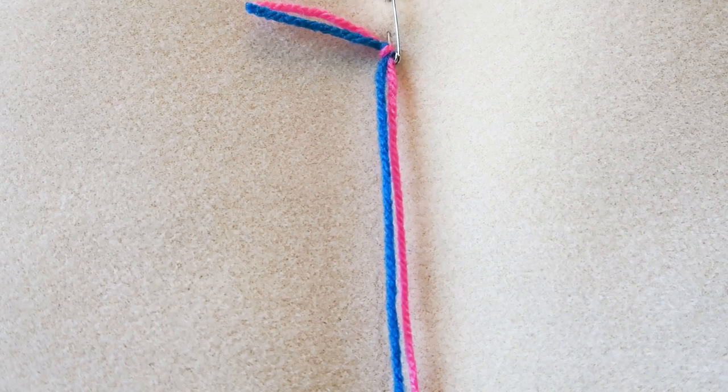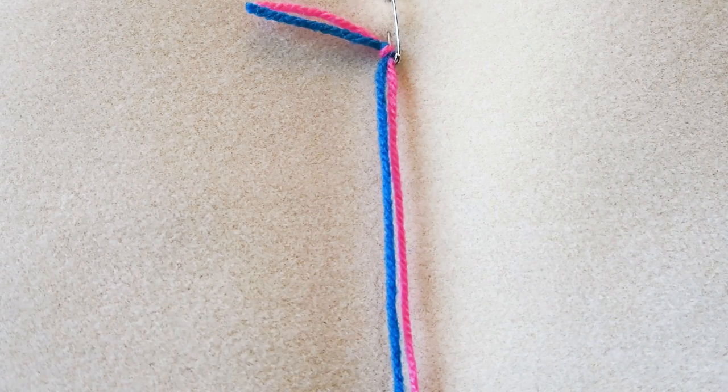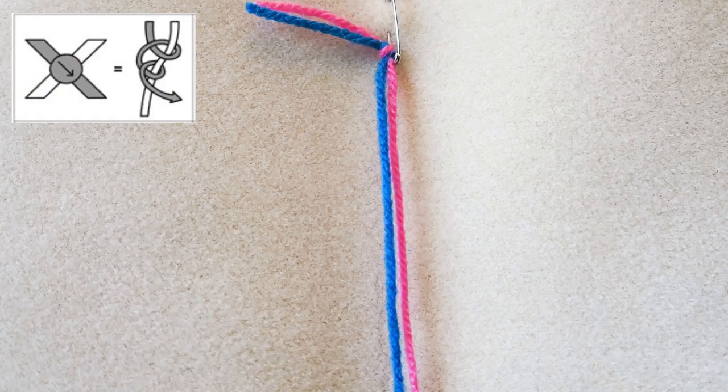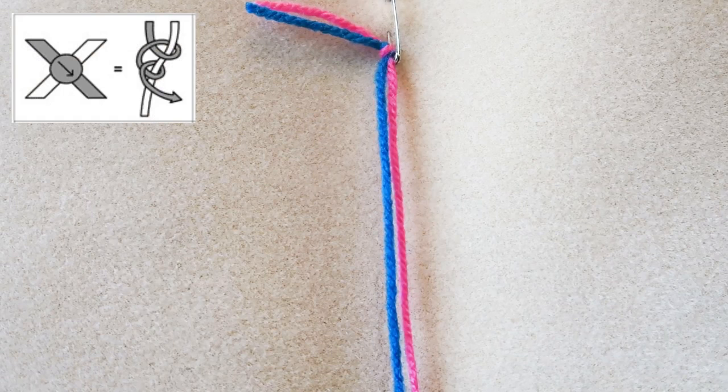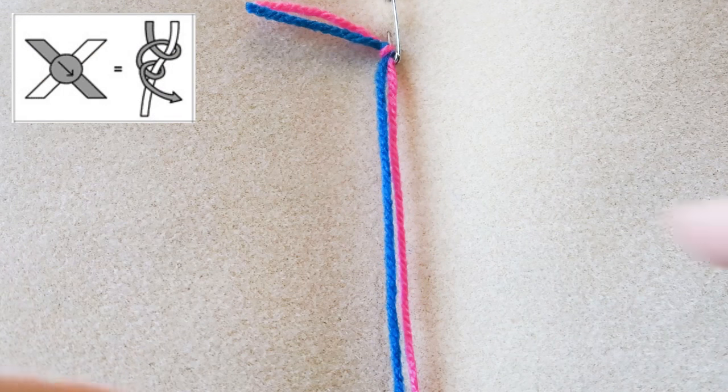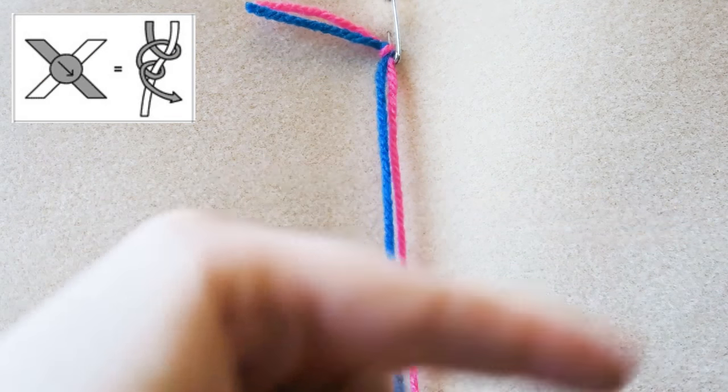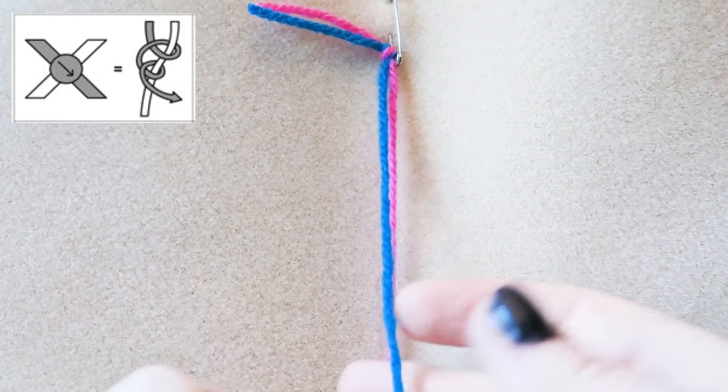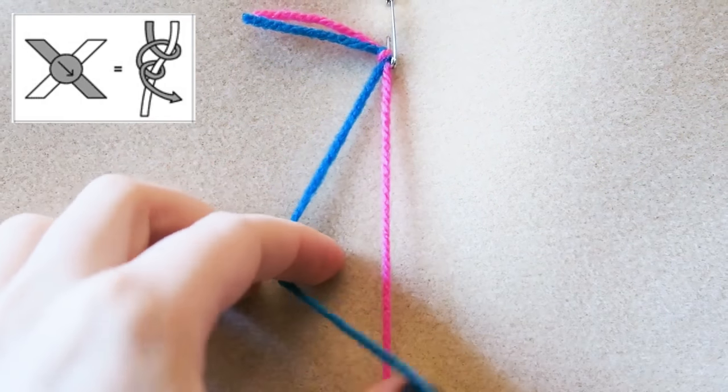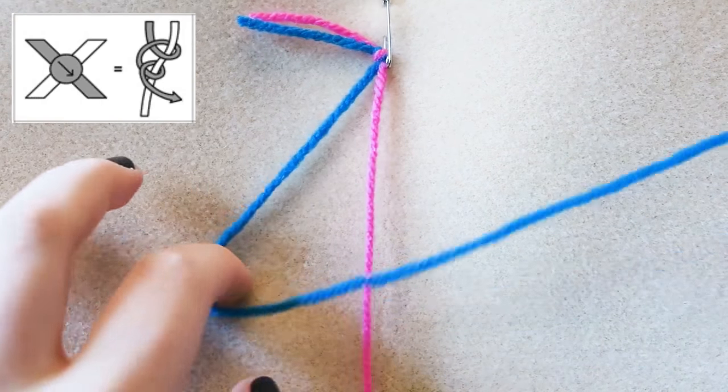So to start with, we are going to start with the forward knot. It's the most basic of friendship bracelet knots. It goes in the right direction, as in that way, as in to the right, not the correct direction. So we are going to start out by making a four shape with our threads, like a four.